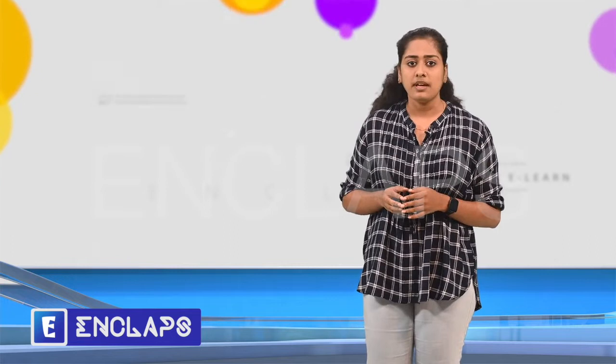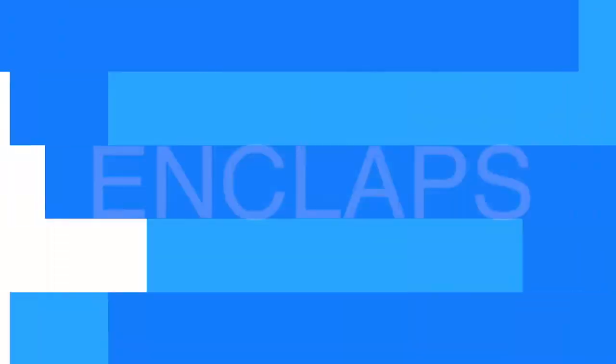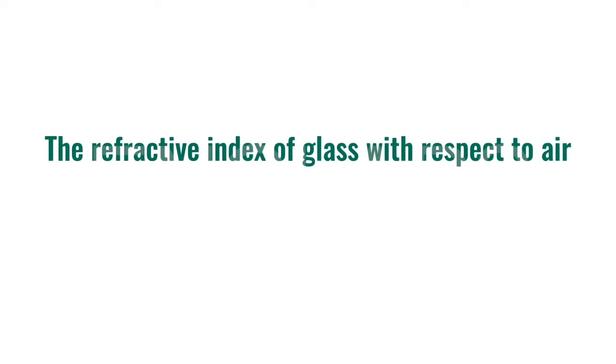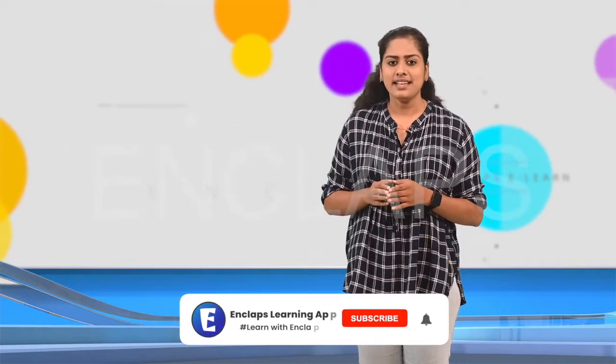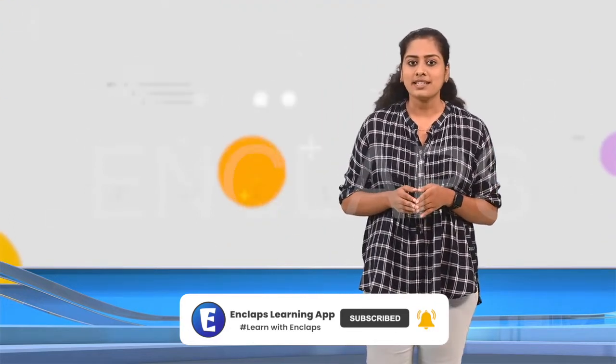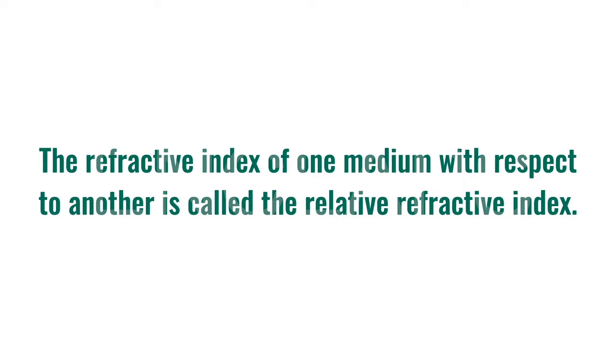Let's take another example. Consider glass as the first medium and air as the second medium. We have to find out the refractive index of glass with respect to air. We know that the velocity of light in glass should come in the denominator. So, the refractive index of glass with respect to air is the velocity of light in air divided by the velocity of light in glass. We understand that the refractive index is a relative quantity — we cannot determine the refractive index of one medium alone; we have to take another medium for comparison. The refractive index of one medium with respect to another medium is called the relative refractive index.